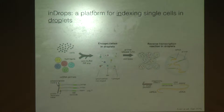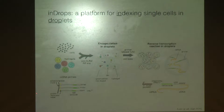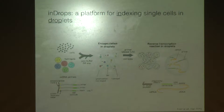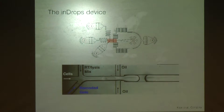inDrops is a microfluidic method that relies on the encapsulation of individual cells into nanoliter-sized droplets. We co-encapsulate cells along with a synthetic hydrogel. This hydrogel carries a primer for reverse transcription, and that primer has all kinds of goodies in it — cell barcodes, UMIs, and all the molecular tags we need to deconvolute the sample later on. After encapsulation, we perform our RT reaction inside the droplets, where we barcode each cell's entire transcriptome. We can then break the droplets and perform a more or less standard next-generation sequencing library prep. This is a schematic of the inDrops device — a PDMS-based microfluidic flow device with four inlet chambers and a single output chamber where we harvest our droplets.